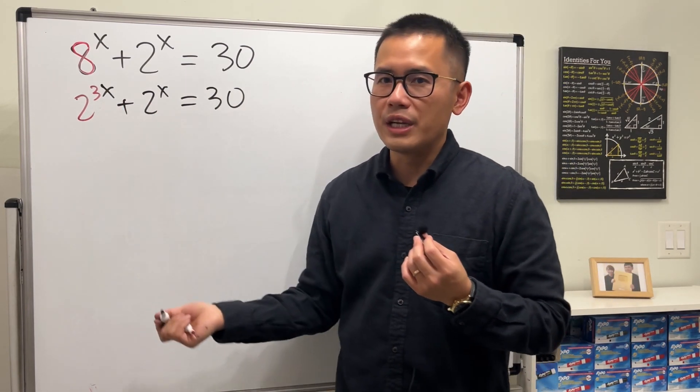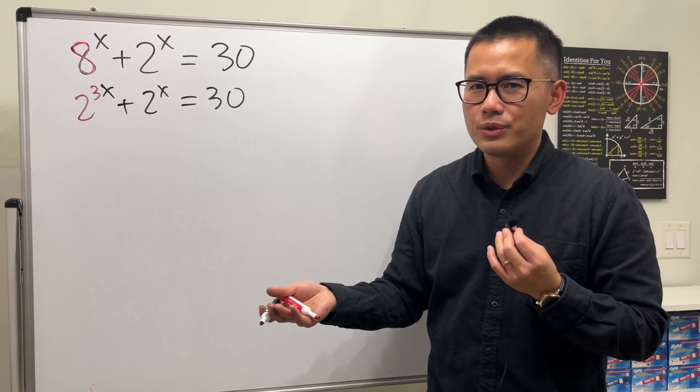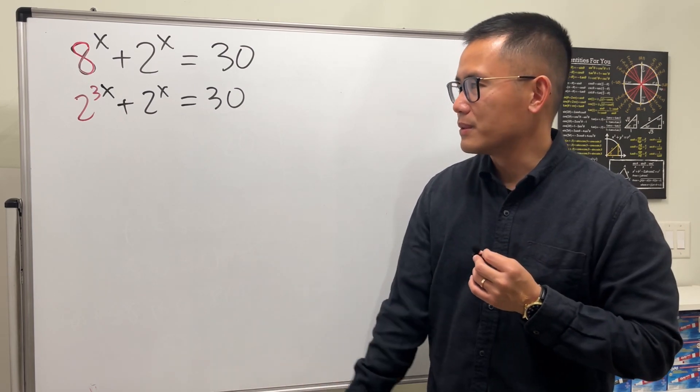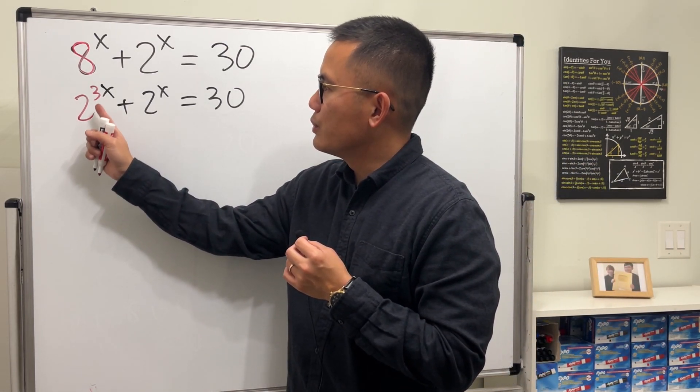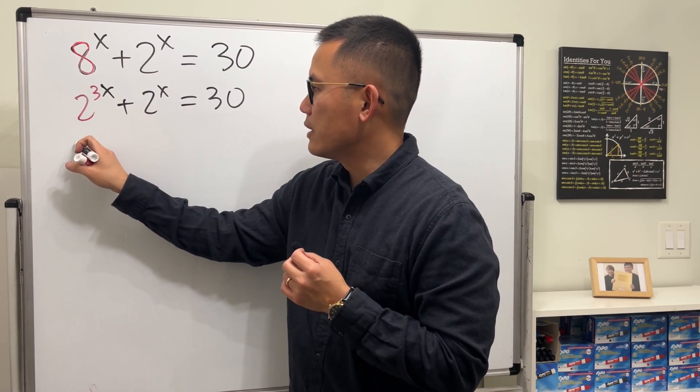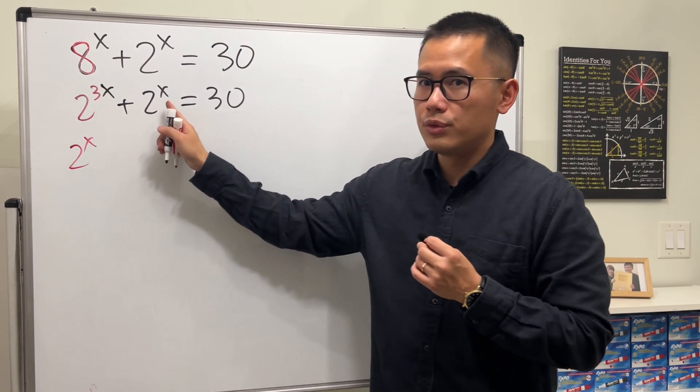I don't know, the bases are the same, but unfortunately it doesn't do us too much good, right? But how about let's look at this as follows. Instead of looking at this as 2 to the 3x, why don't we look at this as 2 to the x right here?